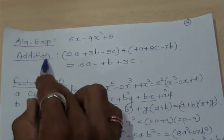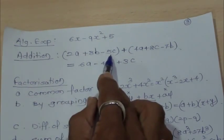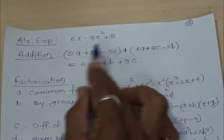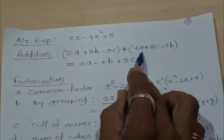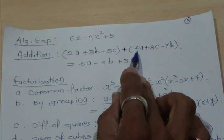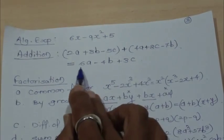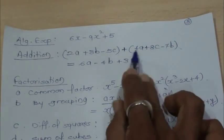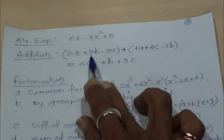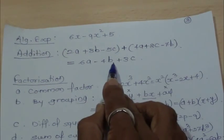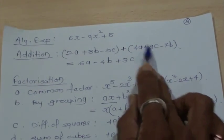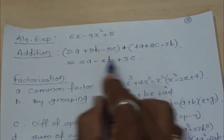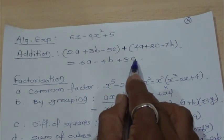For the addition of algebraic expressions, consider two expressions: 2a plus 3b minus 5c, and 4a plus 8c minus 7b. 2a and 4a are similar terms, so 2 plus 4 gives 6a. For b terms: 3b minus 7b gives minus 4b. For c terms: minus 5c plus 8c gives 3c. The final answer has 3 terms — 6a minus 4b plus 3c — where a, b, c are variables and 6, 4, 3 are constants.